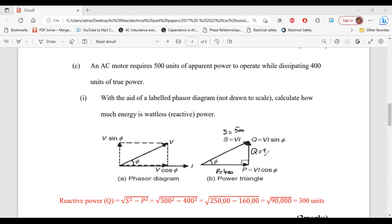All right. So with Pythagoras theorem, we know that this side of the triangle would be the hypotenuse, where the true power is, and where the reactive power is, which is Q, that would be the opposite. So to find the reactive power, Q is equal to the square root of S squared minus P squared, equal to the square root of 500 squared minus 400 squared, equal to the square root of 250,000 minus 160,000, equal to the square root of 90,000. And that will give us 300 units. And that would be the reactive power, or in other words, the wattless power. And that's it for part one of C.